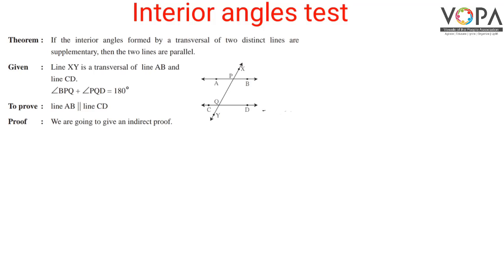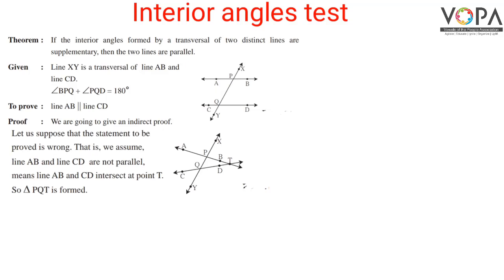Interior angles test: if the interior angles formed by a transversal of two distinct lines are supplementary, then the two lines are parallel. We are given that line XY is a transversal of line AB and line CD, and angle BPQ plus angle PQD equals 180 degrees. We have to prove that line AB is parallel to line CD. We will give an indirect proof — suppose the statement to be proved is wrong, and assume that line AB and line CD are not parallel, meaning they intersect at point T.